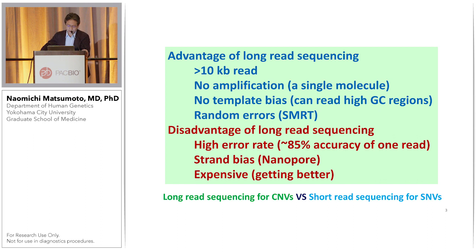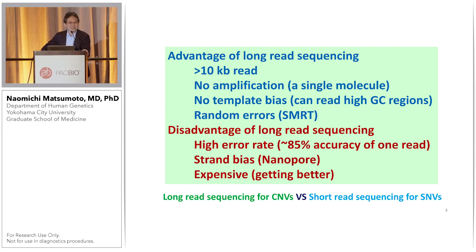Also, the third point is the disadvantage: high error rate in one read, actually 85% accuracy. And especially nanopore sequencing's strand biases are famous issues, and the cost is very important. But it's getting better, especially after the SEQUEL 2 system appeared.